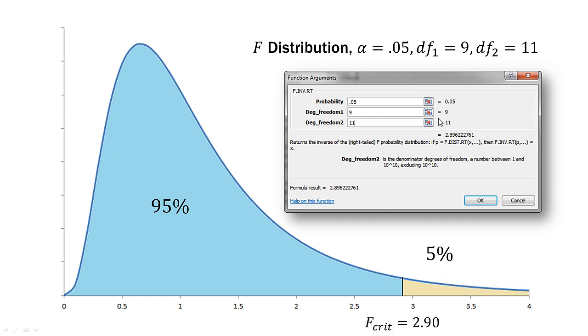So that is our critical value that separates the non-rejection region here in the blue, and the rejection region in the tail.